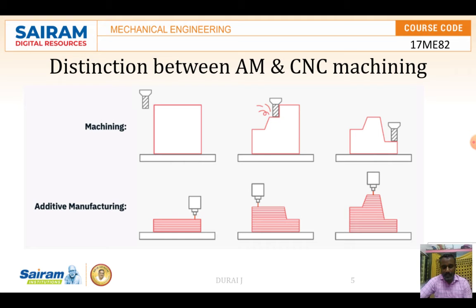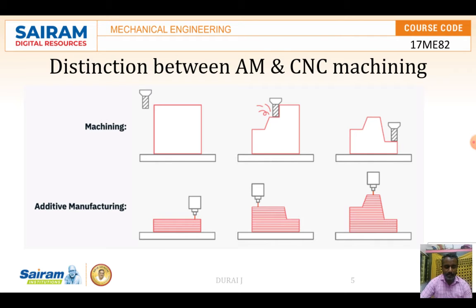In terms of material differences, additive manufacturing uses liquid resins, nylon powder, metal powder, gypsum powder, sandstone powder, wire, and sheet. In CNC machining, materials like cast iron and sheet metal products are used — mainly iron-based work pieces. These are the main differences between additive manufacturing and CNC machining.